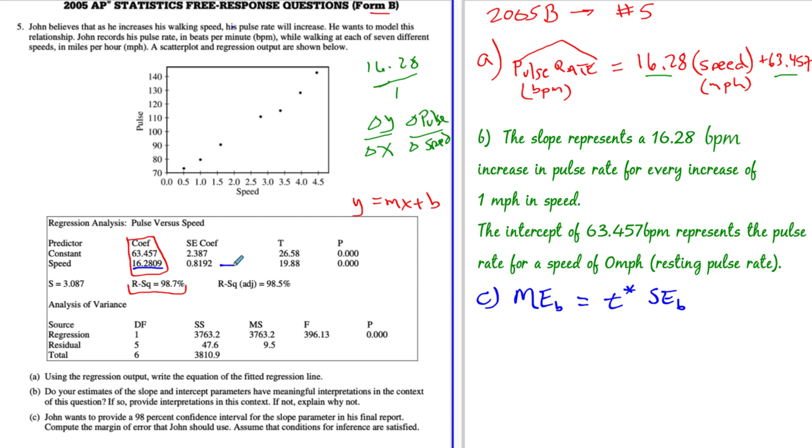But we have the standard error B. It's right here. Standard error of the coefficient. So that part becomes 0.8192. Now what we need is the T star value for 98% confidence interval. So remember with T, we need to figure out the degrees of freedom. So the degrees of freedom here is always going to equal N minus 2 for regression because we have two variables. In this case, it's going to be 7 minus 2, which is 5 because there are seven data points. So that's the degrees of freedom. Now we just need to figure out what T star is.